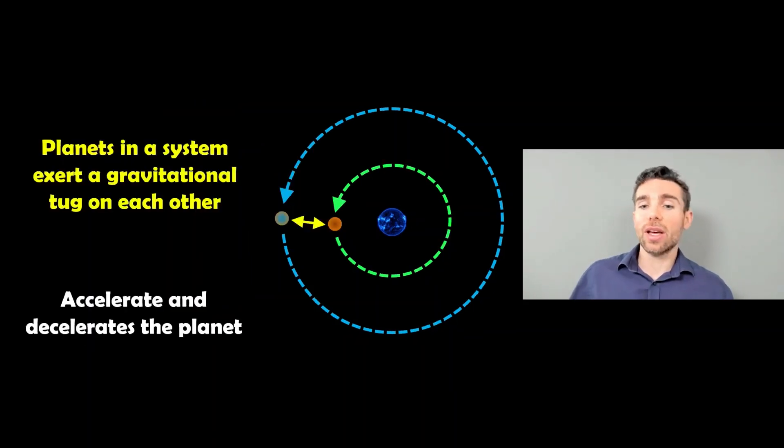If you've got a multiple planet system instead of just a single planet, then they are going to interact with each other. They'll exert a gravitational force on each other as they pass by, and that can ever so slightly accelerate or decelerate the planets and change their orbital velocities as they pass by.